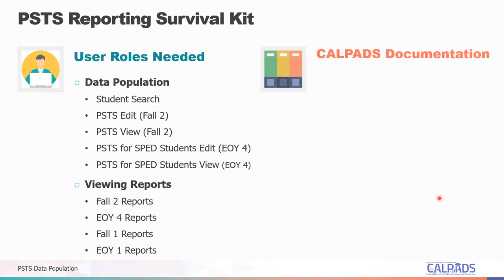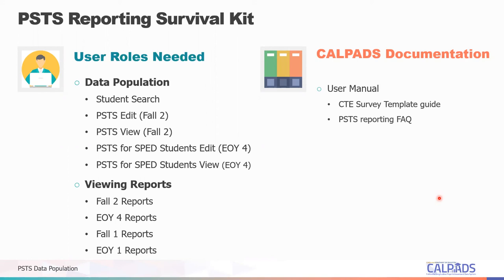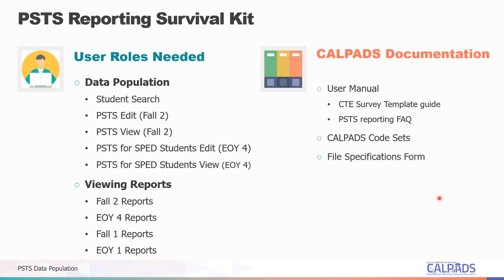LEAs should also be aware that there are excellent reference documents available to download for guidance on different aspects of CALPADS reporting specifically for the PSTS. The CALPADS user manual contains the PSTS section with the updated CTE survey template and guide, as well as the PSTS reporting FAQ prepared by the CDE. You also have the CALPADS code sets, which provide the list of choices for each possible code for the appropriate fields required, the file specifications form for guidance on field population and required codes, the error list to help troubleshoot submission errors, and the data guide which provides business rules, processes, and background for PSTS reporting.